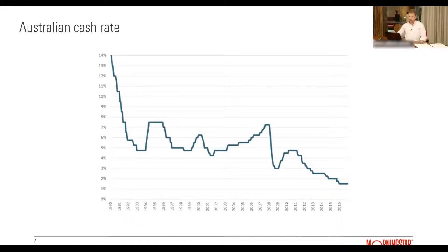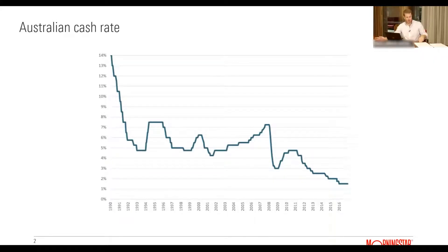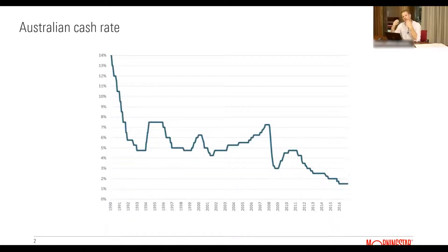Most central banks around the world, including here in Australia, are trying to strike a balance between full employment and controlled inflation, generally characterized as under 2%. Central banks can have two different policies: expansionary, meaning lower interest rates to stimulate the economy and lower unemployment; or contractionary, meaning higher interest rates when the economy is overheating to slow it down.